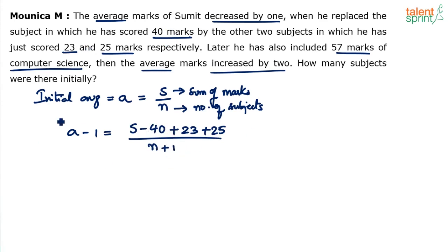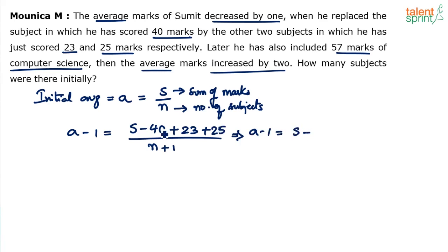So the first equation is: A minus 1 equals S minus 40 plus 23 plus 25, divided by N plus 1. Simplifying: 23 plus 25 is 48, and minus 40 plus 48 is plus 8. So A minus 1 equals S plus 8 divided by N plus 1.